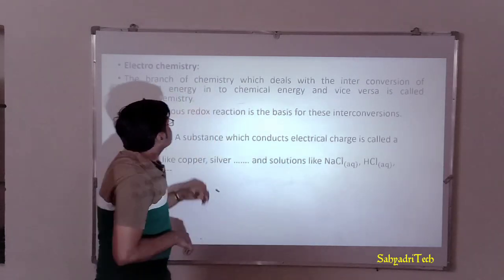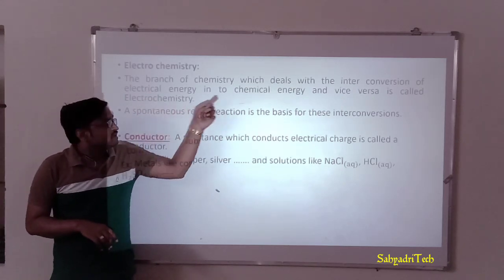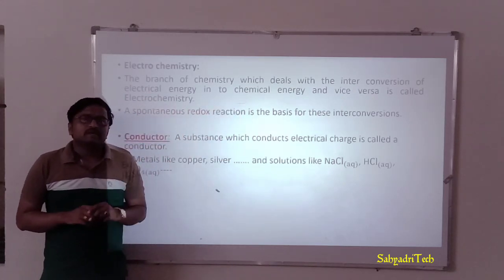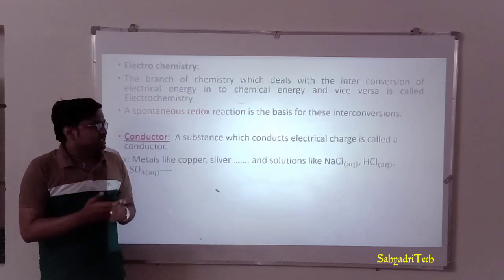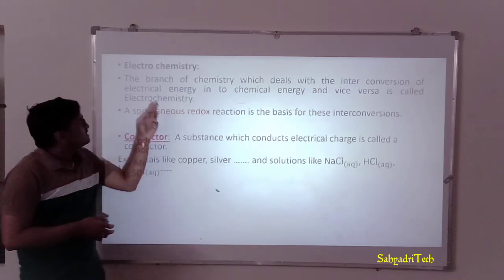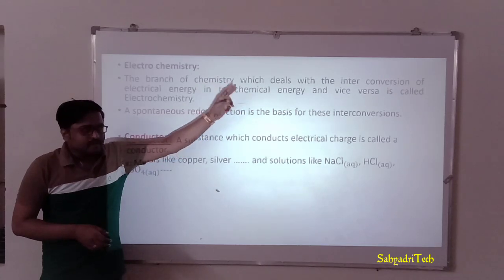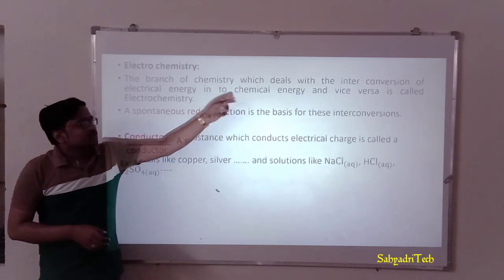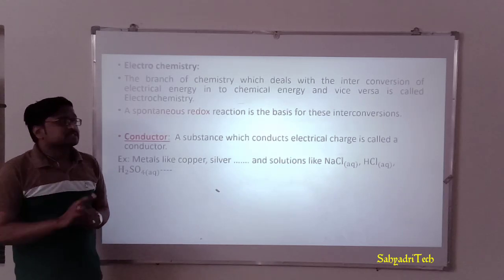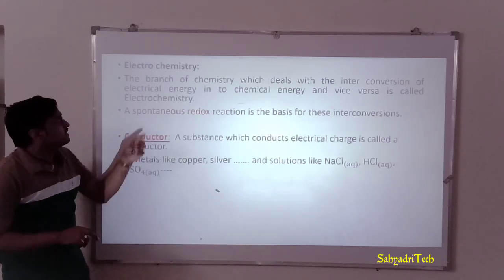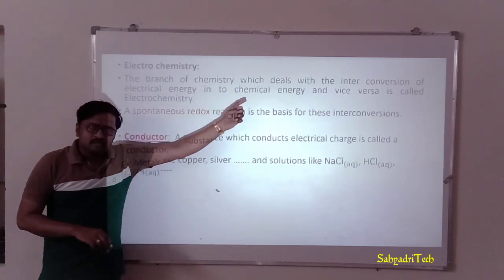According to that, when we consider two energy forms — electrical energy and chemical energy — these two energy forms can be interconverted. Electrical energy can be converted into chemical energy and chemical energy can be converted back to electrical energy. So we consider the interconversion of electrical energy and chemical energy.